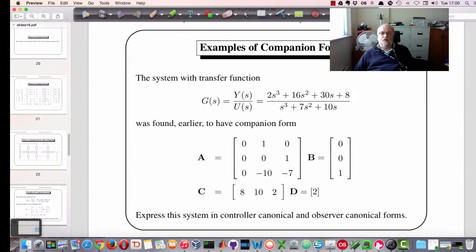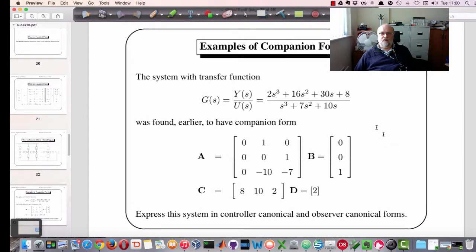So as an example, in the class we will look at this form that we looked at last time. And we'll show that it has this companion form. And we want you to derive the controller canonical and observer canonical forms from that. So we'll quickly do that example in class when we get to it.